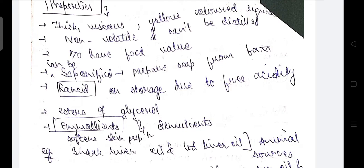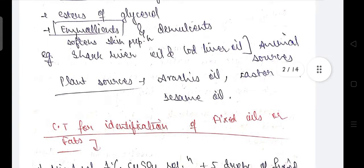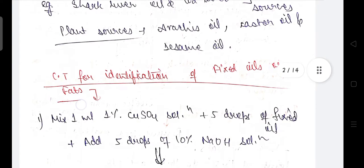Examples from animal sources include shark liver oil and cod liver oil. Plant sources include arachis oil, castor oil, and sesame oil as examples of fixed oil category.